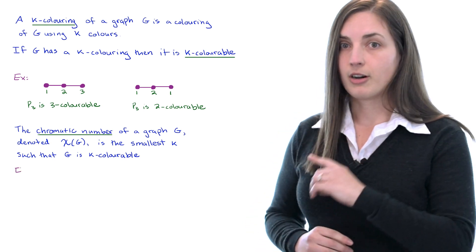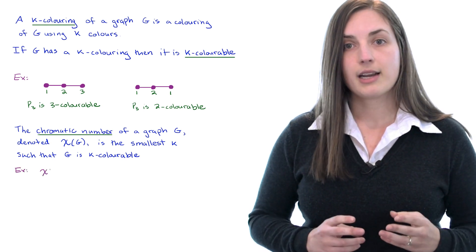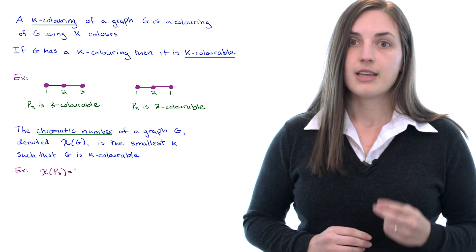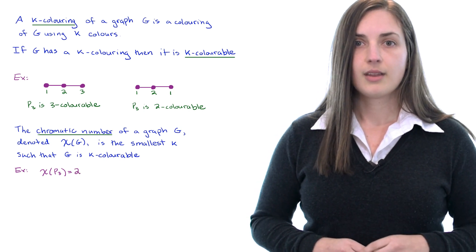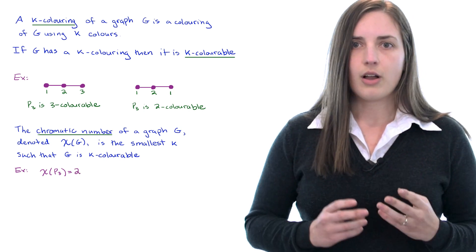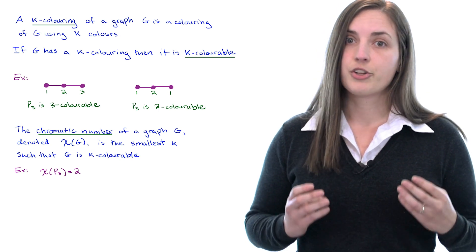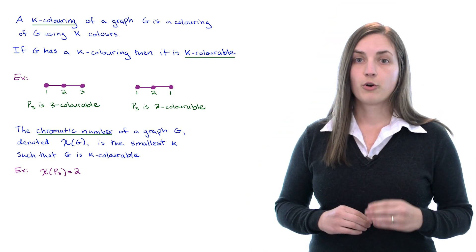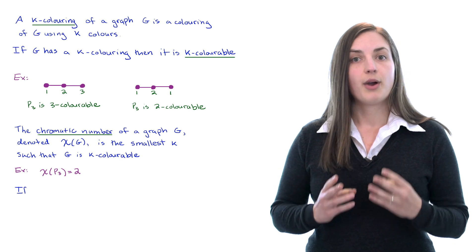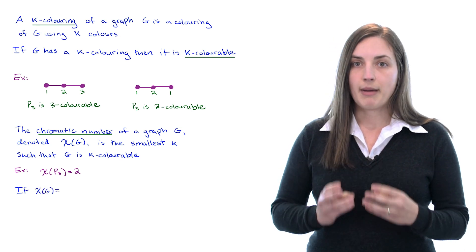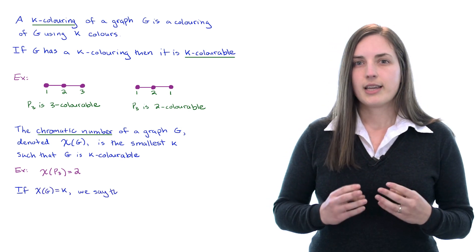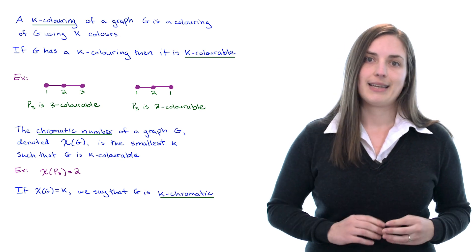So we've seen from our example above that the chromatic number of the path on three vertices is equal to two. Why is it not equal to one? Well obviously if you tried to color all of the vertices the same color you would have a conflict. One more term you'll see a lot is that if you have a graph G whose chromatic number is equal to k we say that the graph G is k-chromatic.